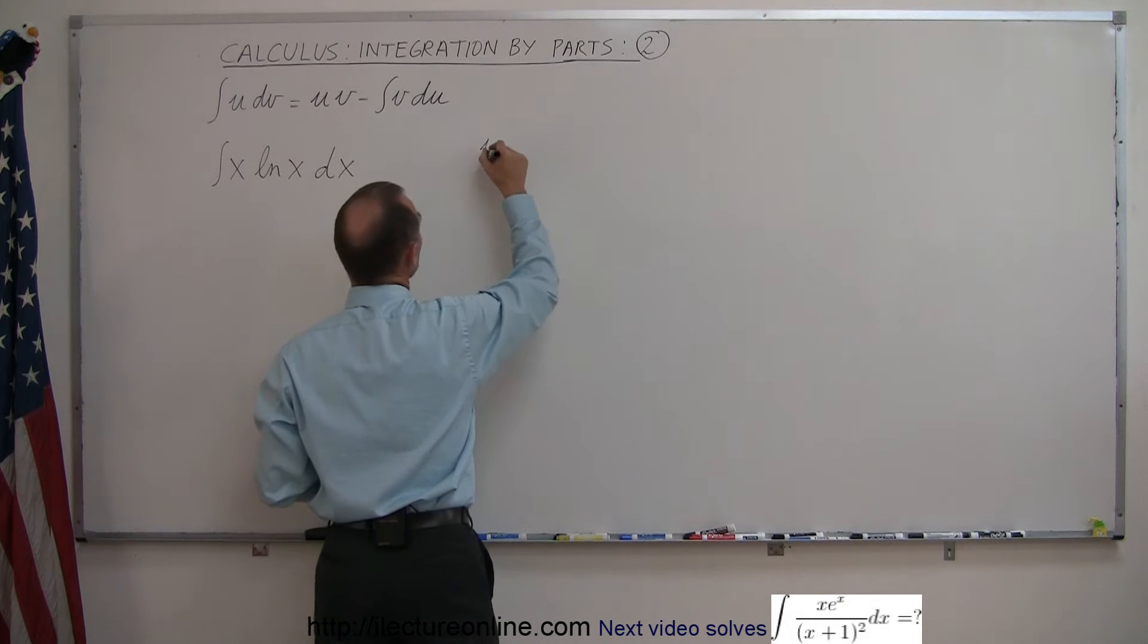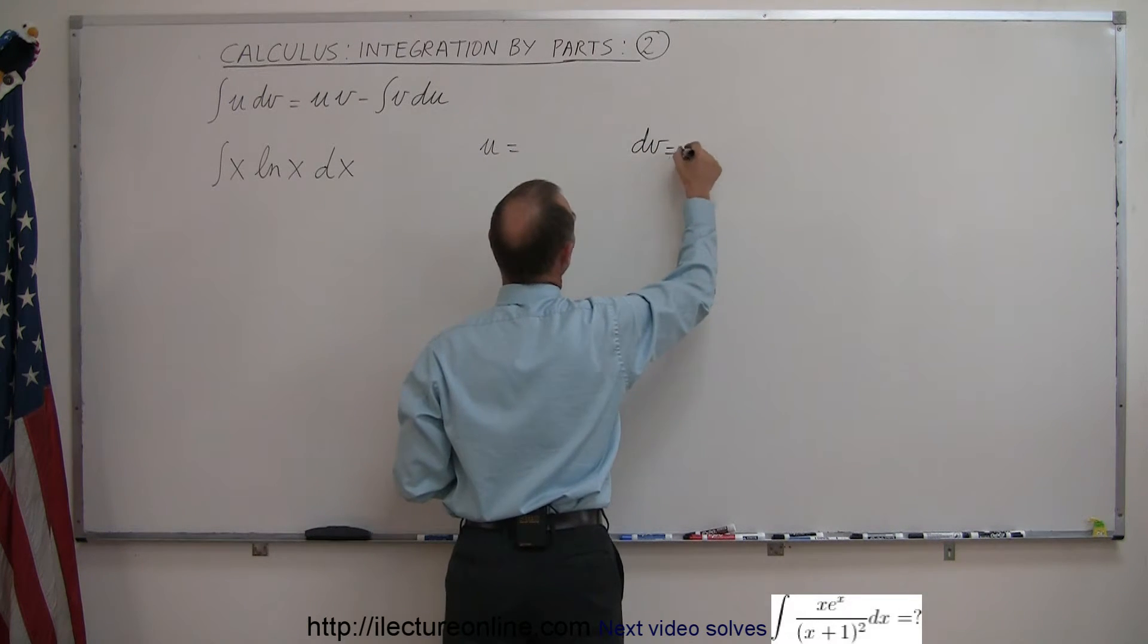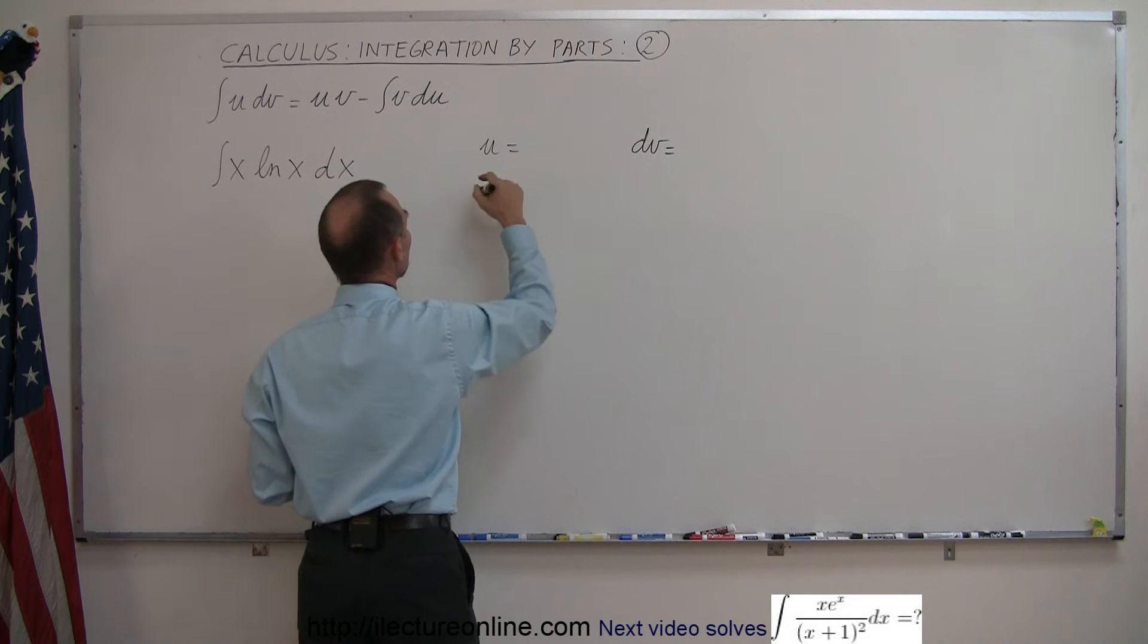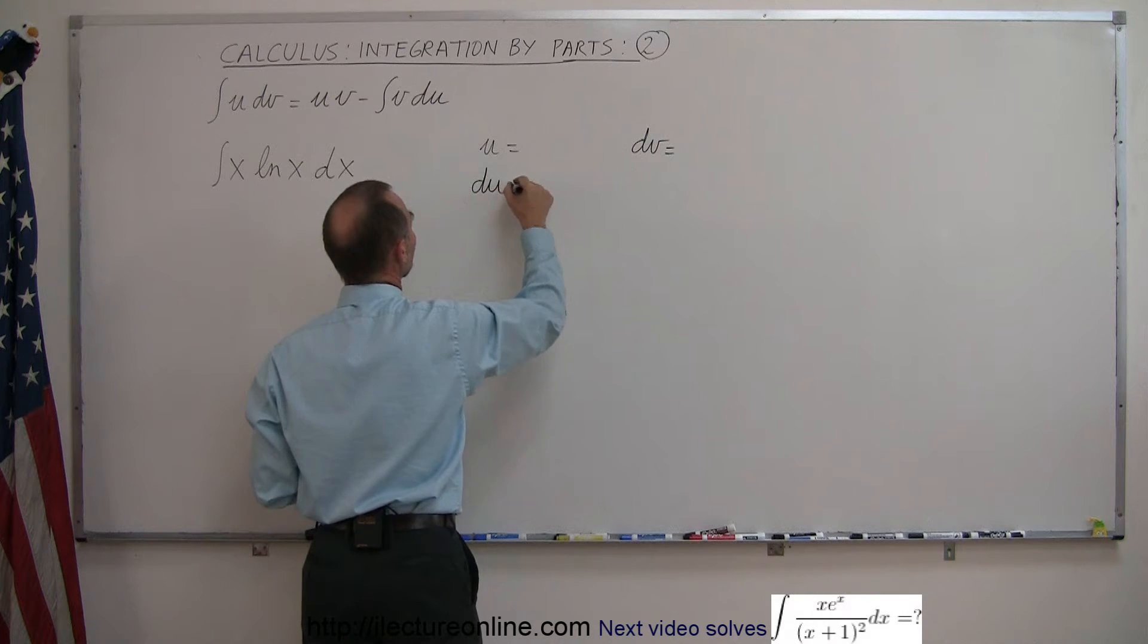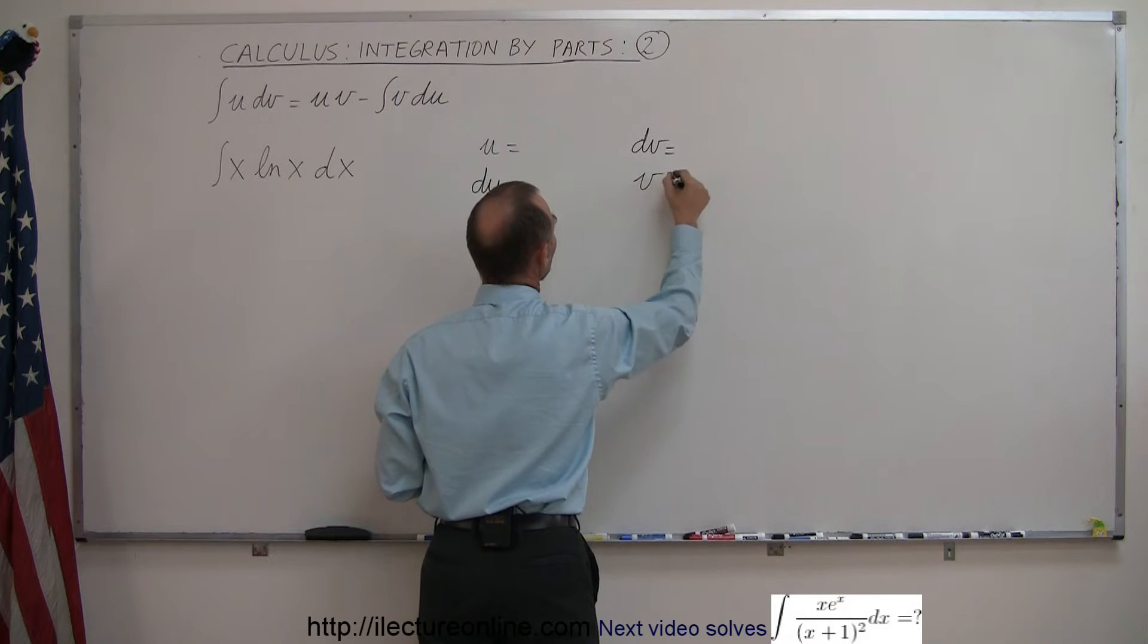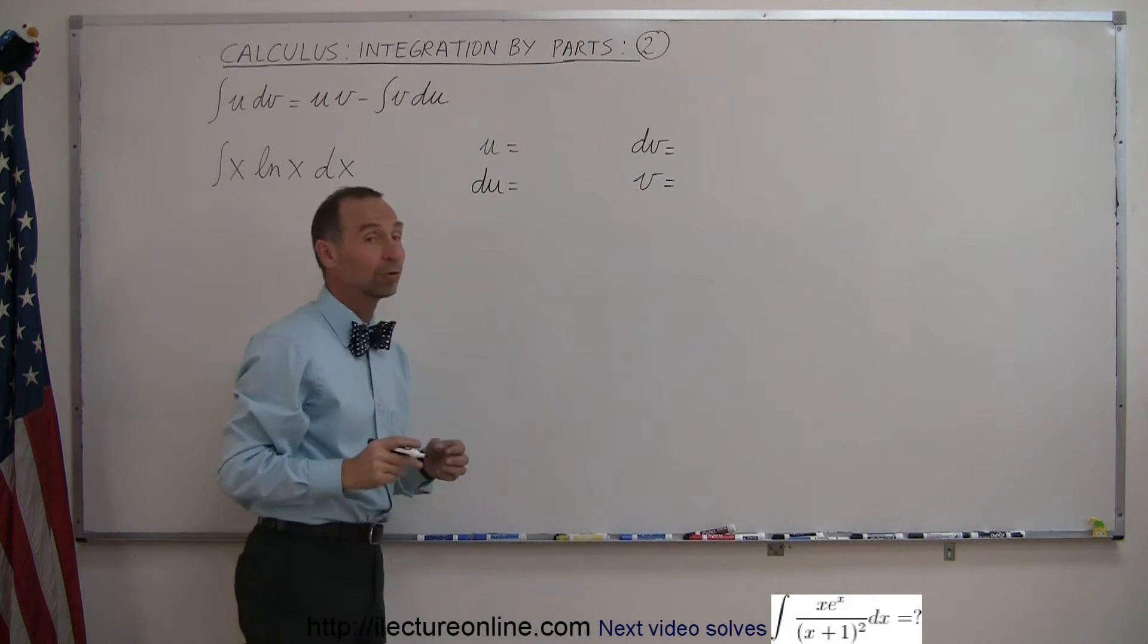So we have to identify u and dv in this integral. Whatever we let u be, we're going to take the differential of that to find du. And whatever we find is dv, we're going to integrate that and find v.